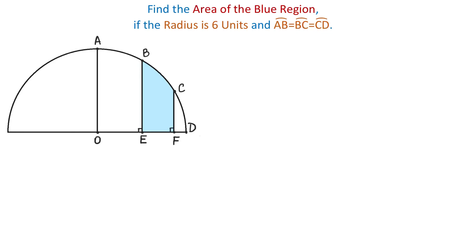In this figure we have a semicircle and the radius is 6 units. The arcs AB, BC, and CD have equal lengths, and we have to find the area of the blue region. To find this area we will start by connecting the points OB and OC. Then at the center we have 3 angles each measuring 30 degrees, and these angles are equal because they cut off equal arcs.